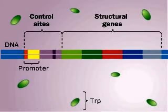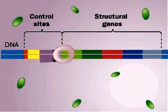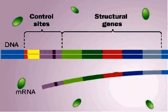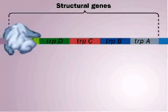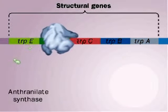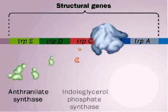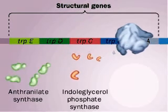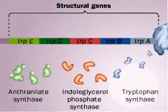When the bacterial cell's tryptophan levels are low, RNA polymerase can bind the promoter and transcribe the structural genes. Each gene encodes a protein chain for an enzyme in the trp synthesis pathway: trpE and D for anthranylate synthase, trpC for indoglycerol phosphate synthase, and trpB and A for tryptophan synthase.